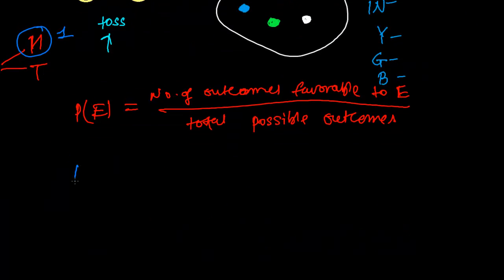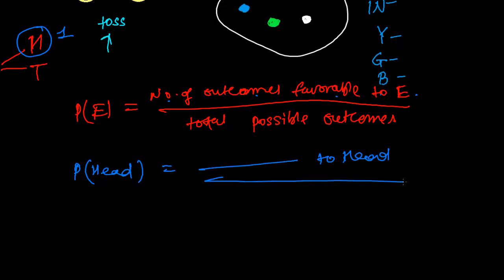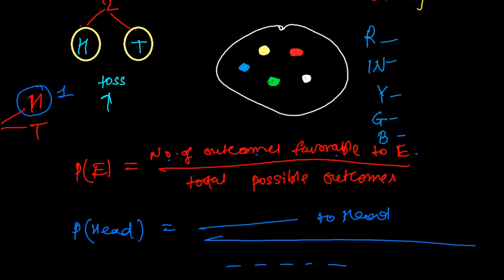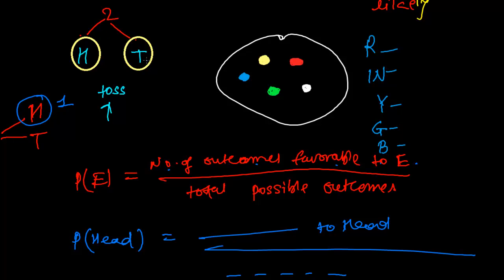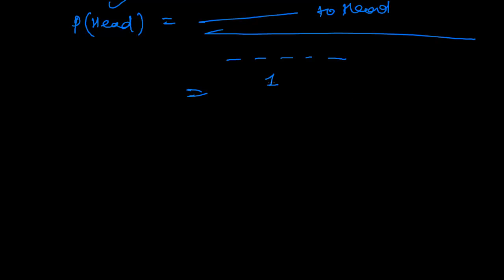Here if I have to find out the probability of head, the outcomes favorable to head is only one, because when I toss a coin I get two possible outcomes total. The one supporting me to find out the probability of head is the head part — that is the favorable outcome. So the probability of getting head is 1 divided by 2, and if you write it in decimal form it is 0.5.